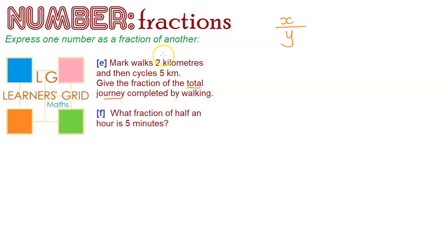So the total journey is 2 plus 5, so that's 7. And we have to express the amount walked over 7, because 7 is the total. And how far was walked? 2. So that's the fraction.